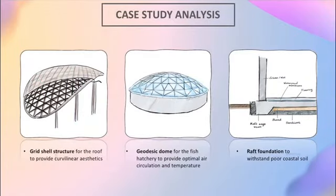For the case studies, the first study is about the grid shell structure for the roof which is a lightweight double-curvature structure that provides a range of aesthetical designs for the roof. The second study is about the geodesic dome which is an ideal roof for a hatchery because it can provide optimal air circulation and temperature within the spaces underneath it. The third study is about raft foundation which is a suitable foundation system for coastal soil.